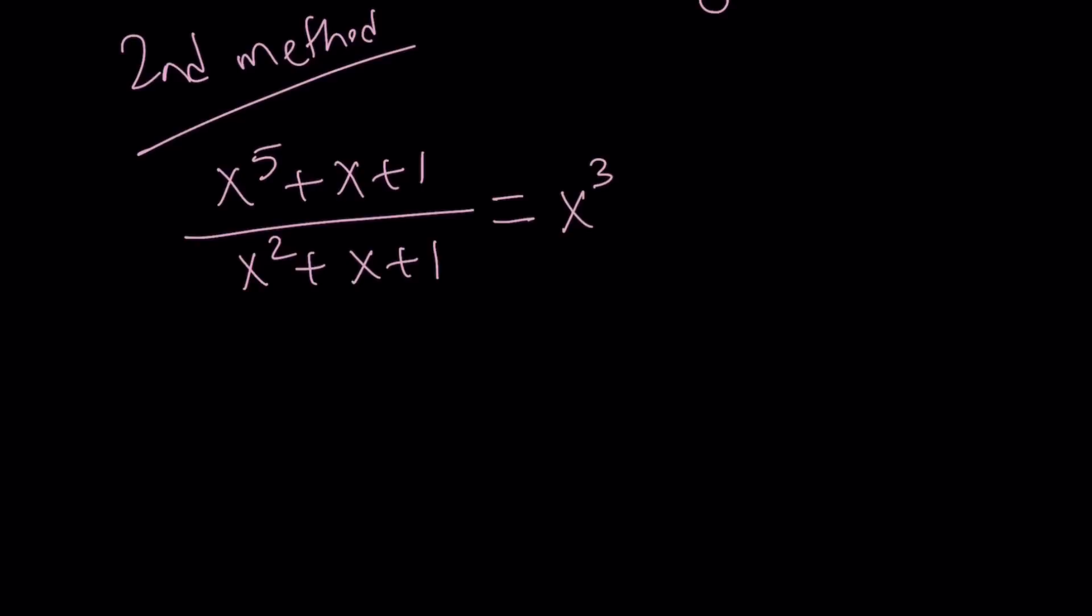So, I should be getting something like x cubed, right? Because I'm dividing x to the fifth by x squared, and then somewhere in the middle, I'm getting some other terms. So, this is going to be like a cubic, so I can write it as x cubed plus bx squared plus cx plus one, and now I'm going to go ahead and cross multiply.